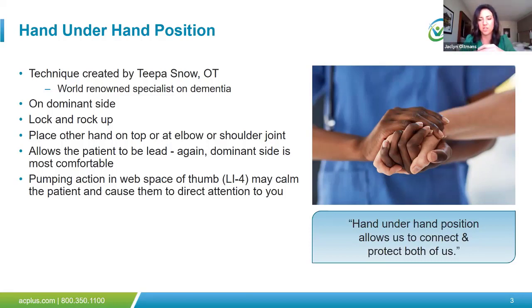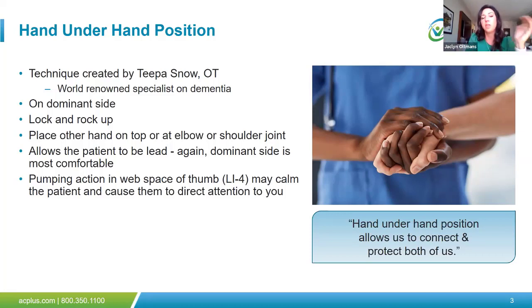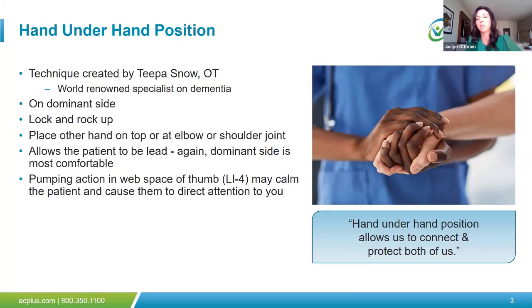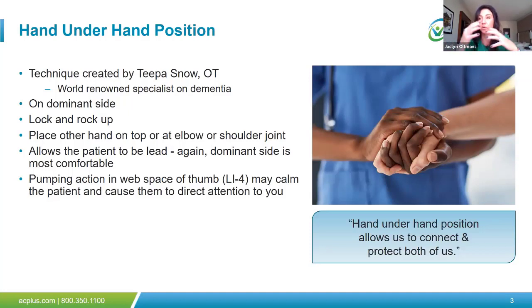It's truly a way to build connection, and you're able to lead your patient wherever you want because wherever their hand goes, their body follows. With the other hand, if you're standing next to your patient and they have a gait belt, place it on the opposite hip on the gait belt, or at a joint. The last place you want that hand is at a muscle belly — you don't want to stimulate those muscle spindles. When leading a patient using hand-under-hand, I don't recommend putting your hand on their back because it can feel like you're forcing them forward.